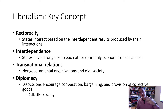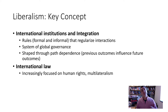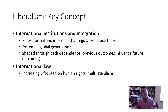Diplomacy and discussions encourage bargaining, negotiation, and the provision of collective goods. Collective security at the UN and NATO is carried out through foreign policies and diplomatic interactions between countries. International institutions and integration — both formal and informal rules — regulate interactions. We have a system of global governance in different forms: the World Trade Organization, the World Bank, the IMF, the UN, specialized agencies like the World Health Organization, and regional integration bodies like the African Union, the European Union, and the Association of Southeast Asian Nations.